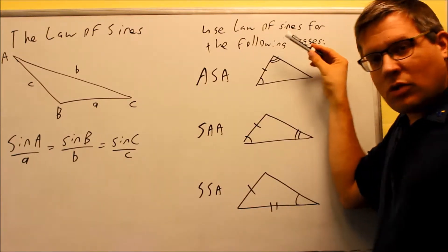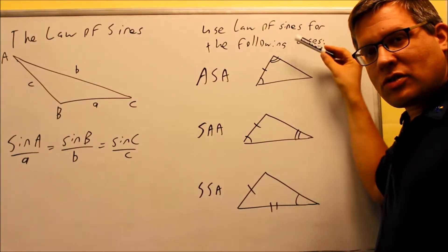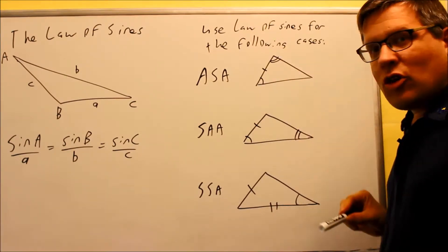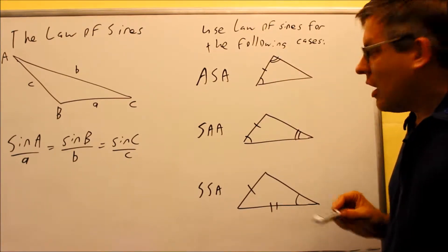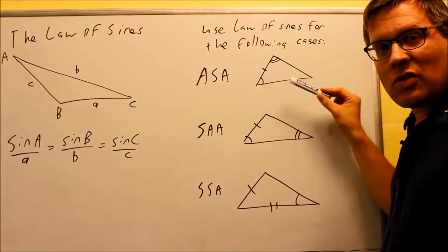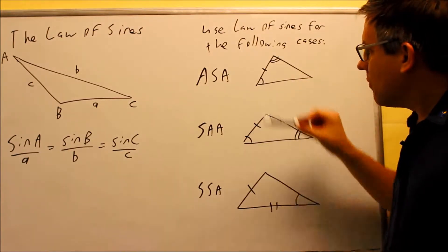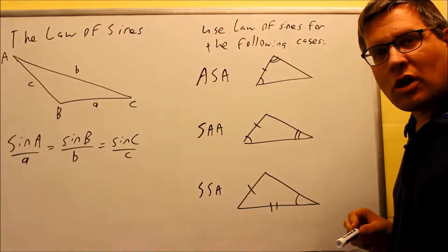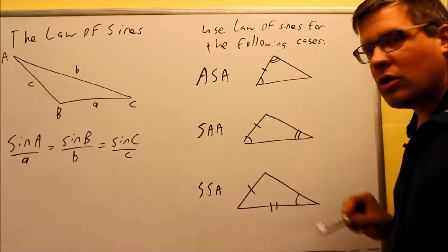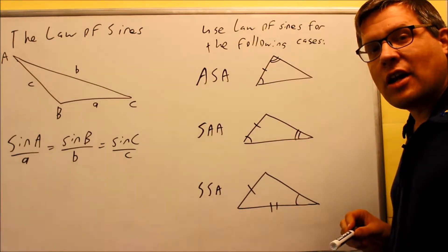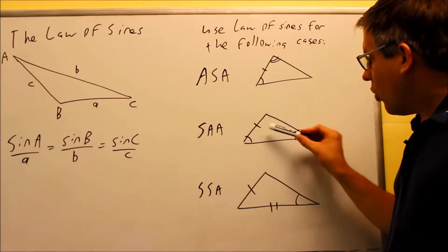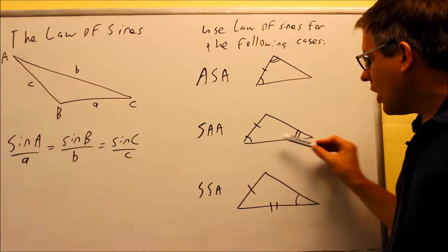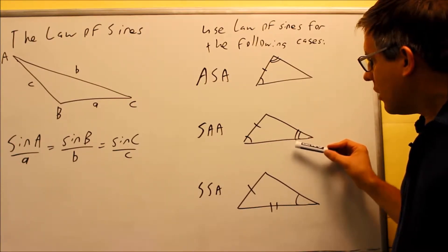You can use the Law of Sines in these cases: ASA, which is angle-side-angle, where you have a side that's in between two given angles. You can also use it for side-angle-angle (SAA), where you have a side that's not between the two given angles.